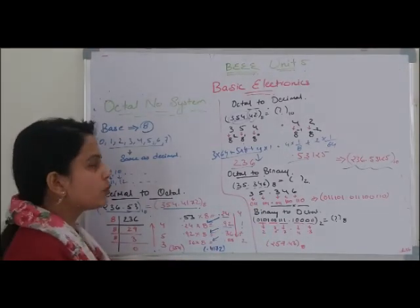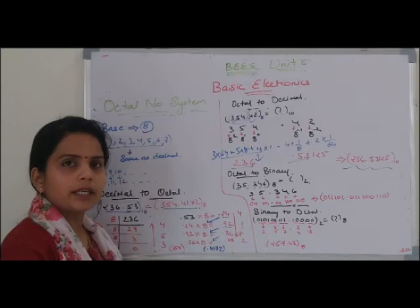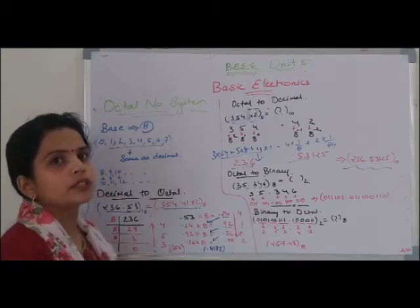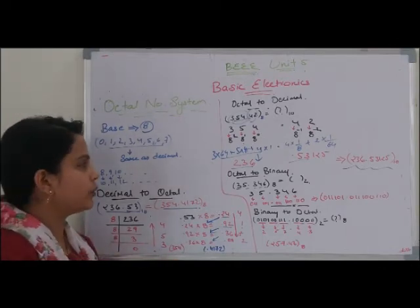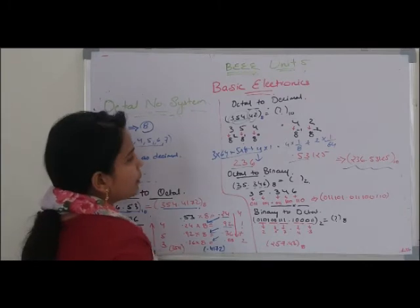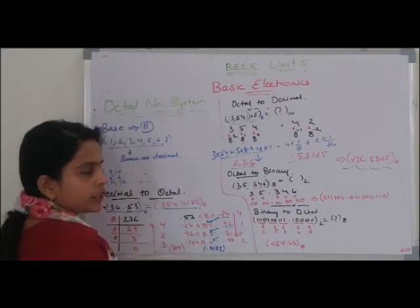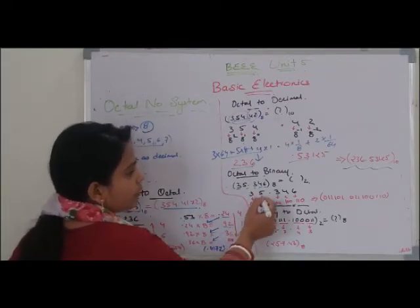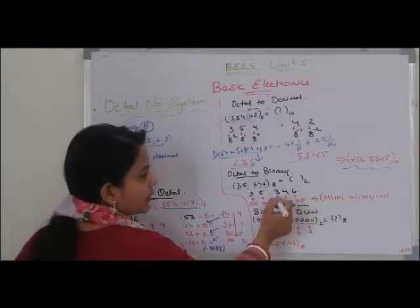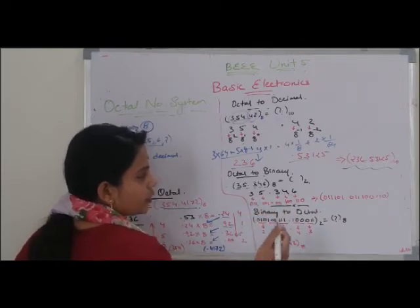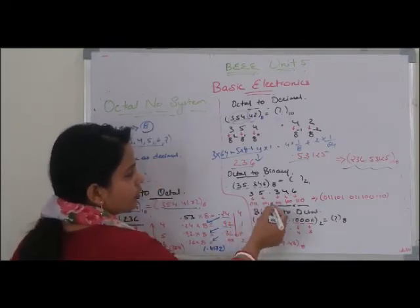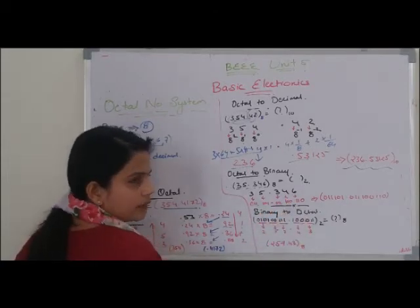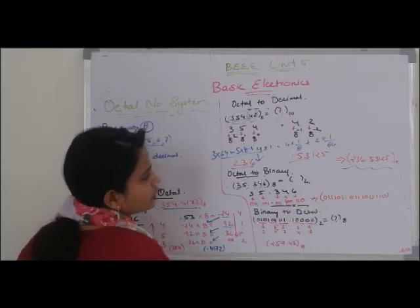For example, for octal to binary conversion, take the number 35.346. We convert each digit individually: 3 converts to 011, 5 converts to 101, then again 3 converts to 011, 4 converts to 100, and 6 converts to 110. We keep 3 digits for each because 8 = 2³.